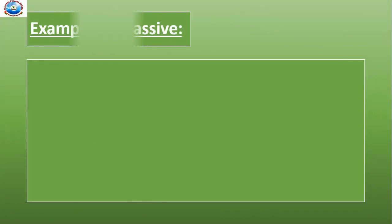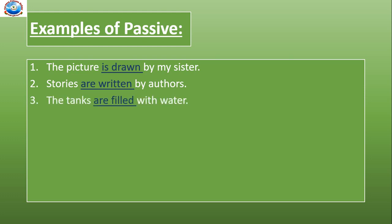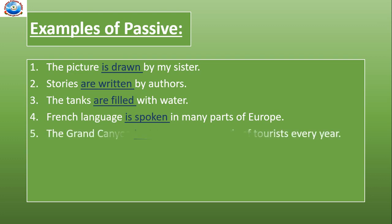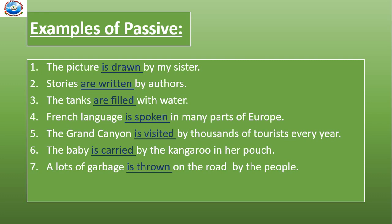Now let's see some examples of passive. Read the sentences carefully and see the underlined words. The picture is drawn by my sister. Stories are written by authors. The tanks are filled with water. French language is spoken in many parts of Europe. The Grand Canyon is visited by thousands of tourists every year. The baby is carried by the kangaroo in her pouch. A lot of garbage is thrown on the road by the people. My books are checked by my teacher. The highlighted word shows the passive form of the sentence.